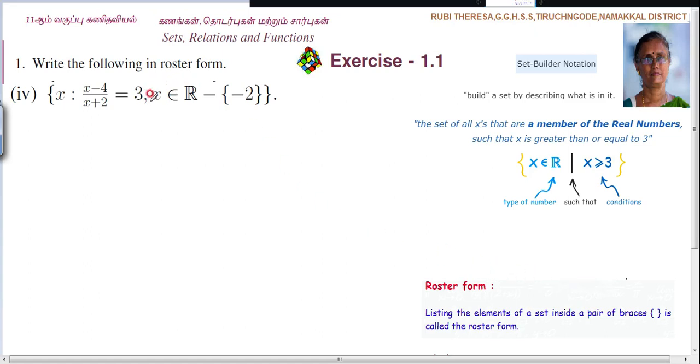One student asked about what is this form. This is called set builder form. What is meant by set builder form? That is you are building a set. Build a set by describing what is in it. So they will write like this. That is the type of a number and the condition.